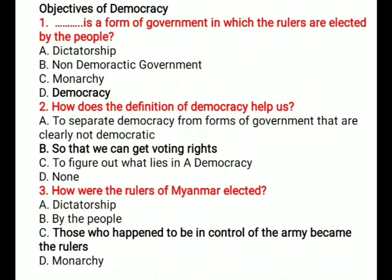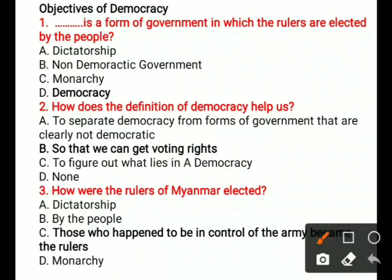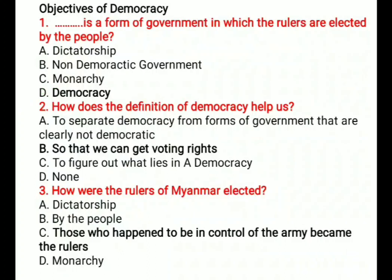Question 1: A form of government in which the rulers are elected by the people. Options are: A) Dictatorship, B) Non-democratic government, C) Monarchy, D) Democracy. The correct option is D, Democracy.